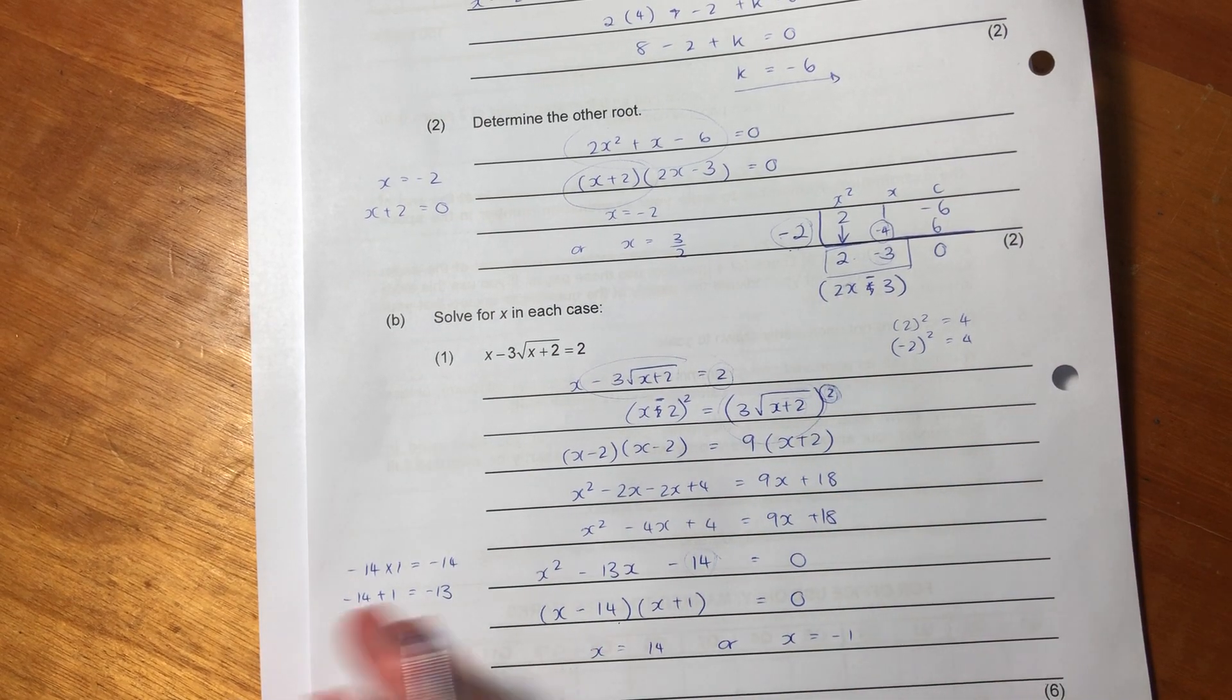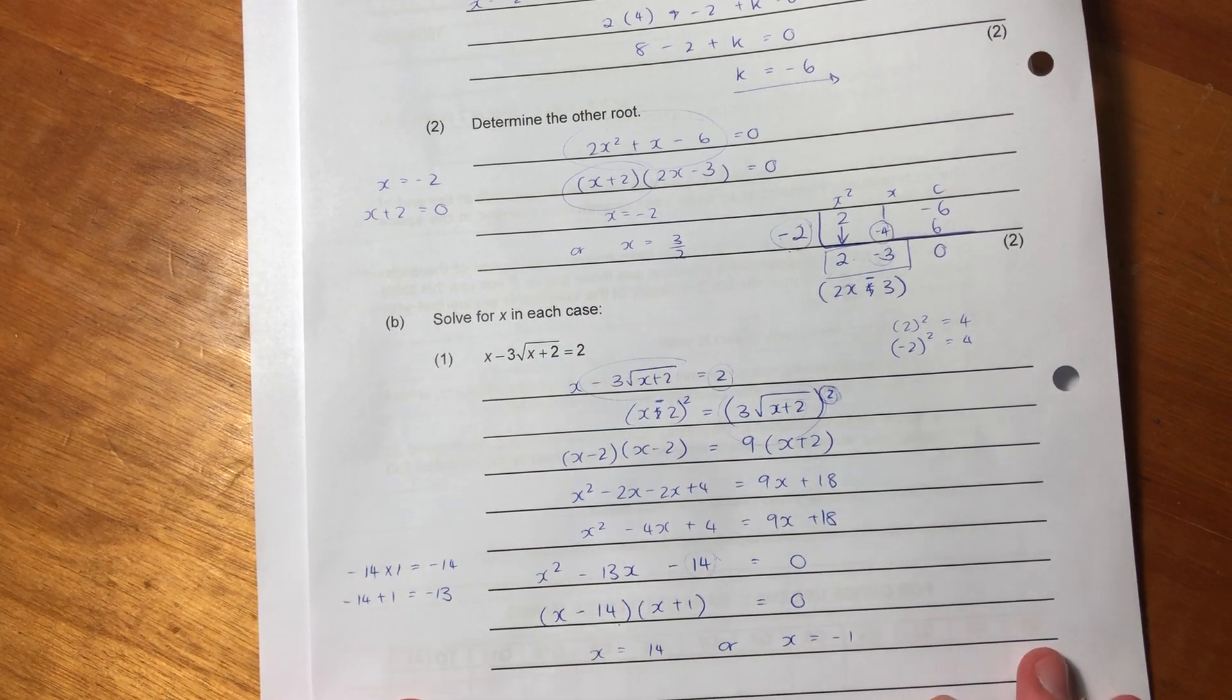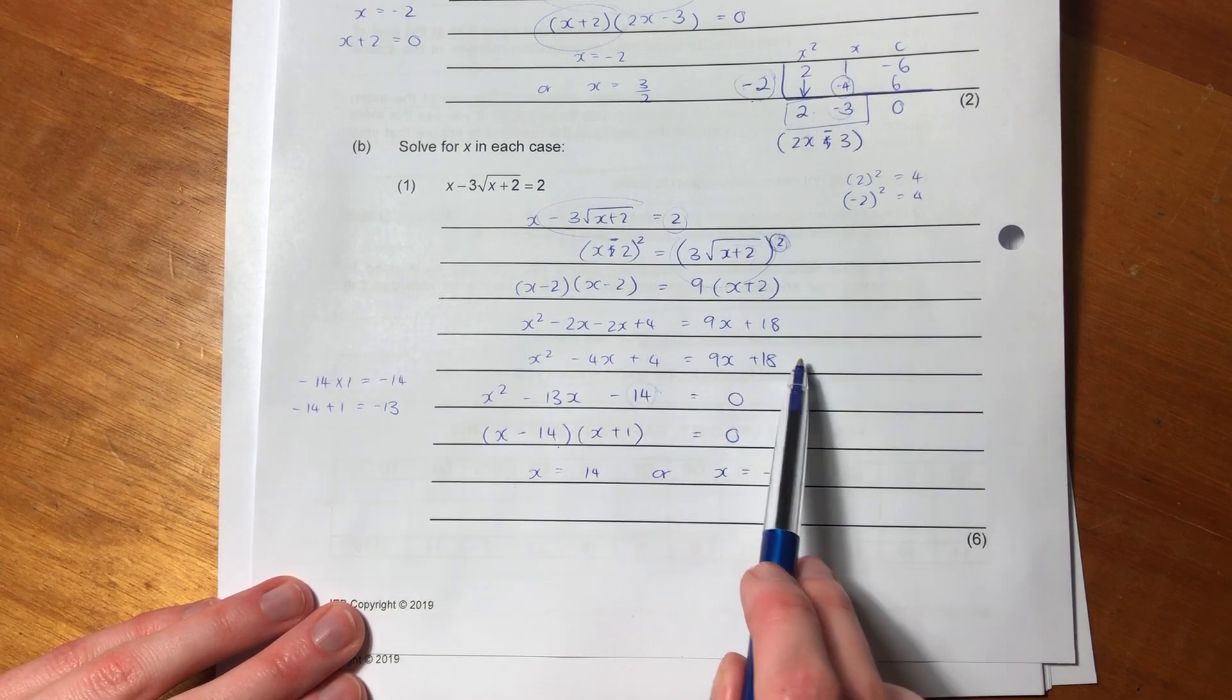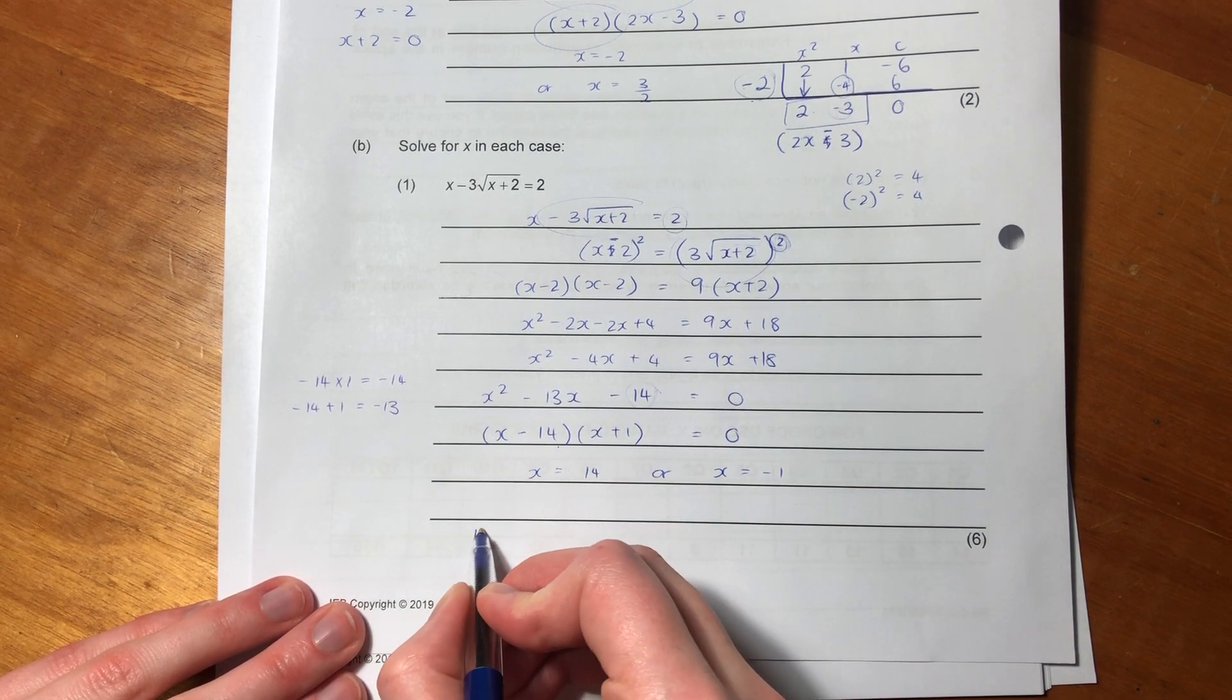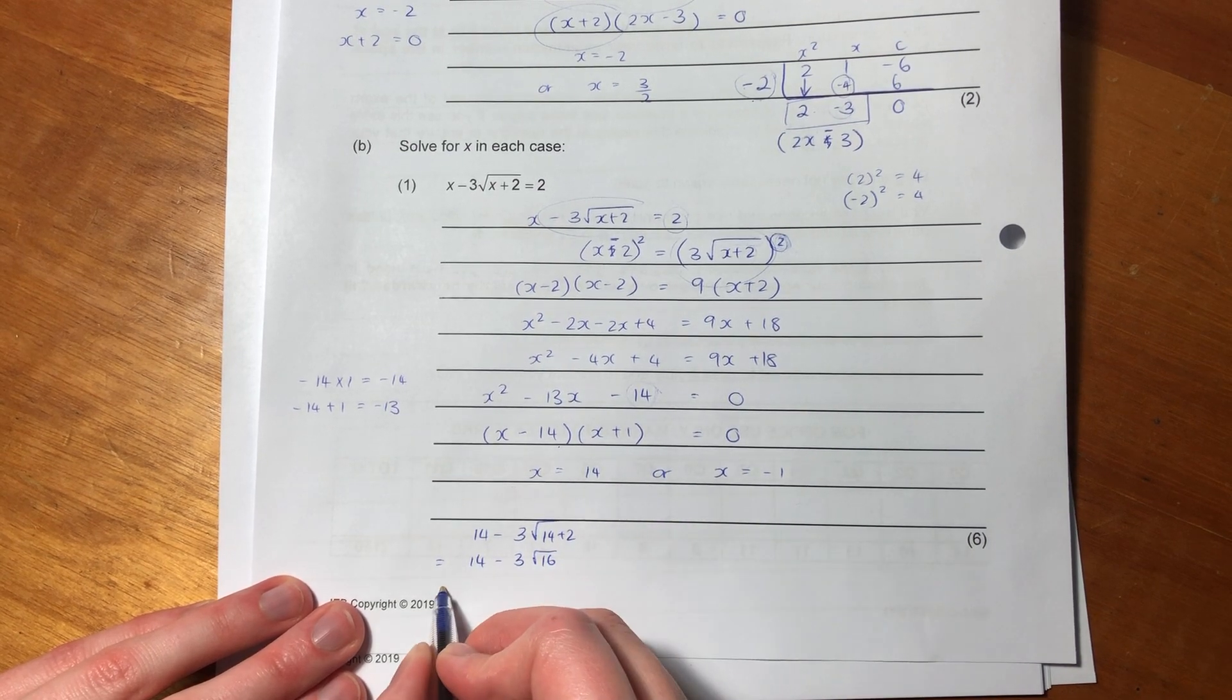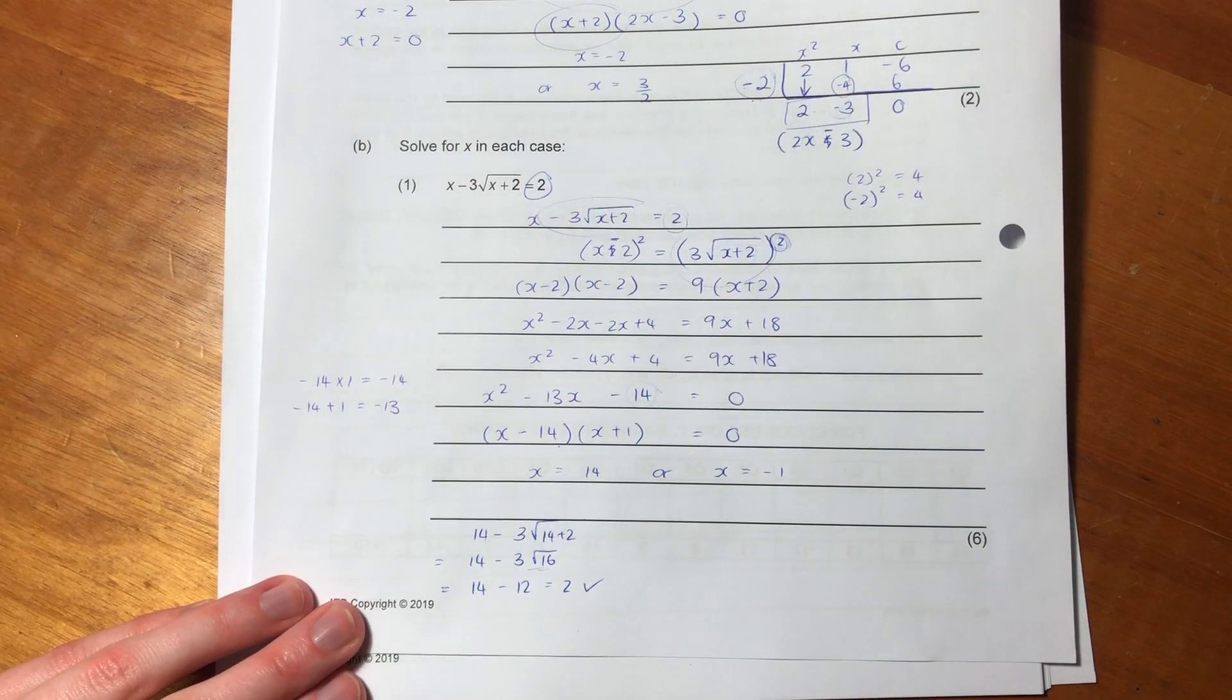But what did I say over here? I said when we introduce a square, we have to check our answers. So let's check them. Let's put 14 into our original calculation there. Let me check you can see what I'm doing. Oh, goodness, I don't know if you could see that. Okay, sorry if that was a bit unseen, just if you weren't following me, just what I did here, times it out, and then I just factorized. So let's put it back into our original. So we have 14, 3, 14 plus 2, which is going to be 14 minus 3, square root of 16. What is the square root of 16? It is 4. 14 minus 12 equals 2. So we know that 14 works, because it equals that side. Not a problem.